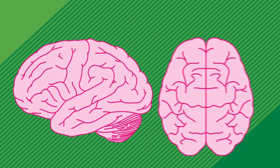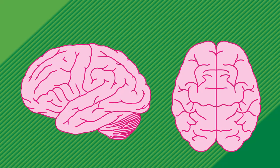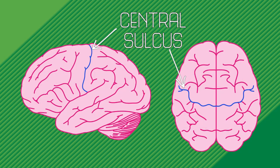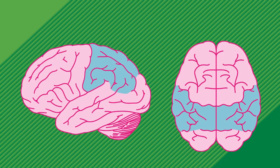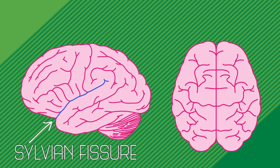The frontal lobe is separated from the parietal lobe by the central sulcus, while the distinction between the parietal lobe and temporal lobes is created by a separation called the sylvian fissure. These may seem like fairly arbitrary distinctions when we look at the whole brain, but each of these lobes has a distinct set of functions.